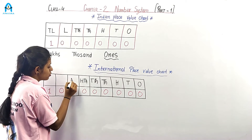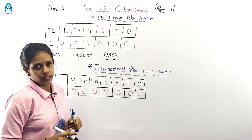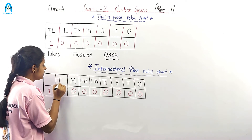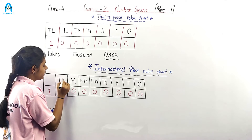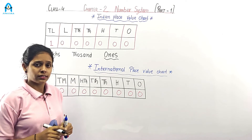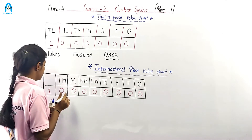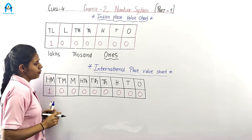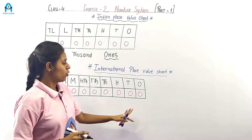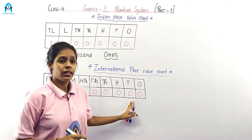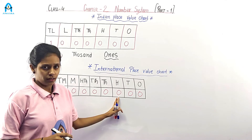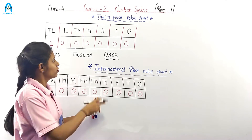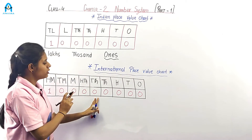Next is called million. After that is ten million. And the last is called hundred million. So: ones, tens, hundreds, thousands, ten thousands — both Indian and international are the same for these.